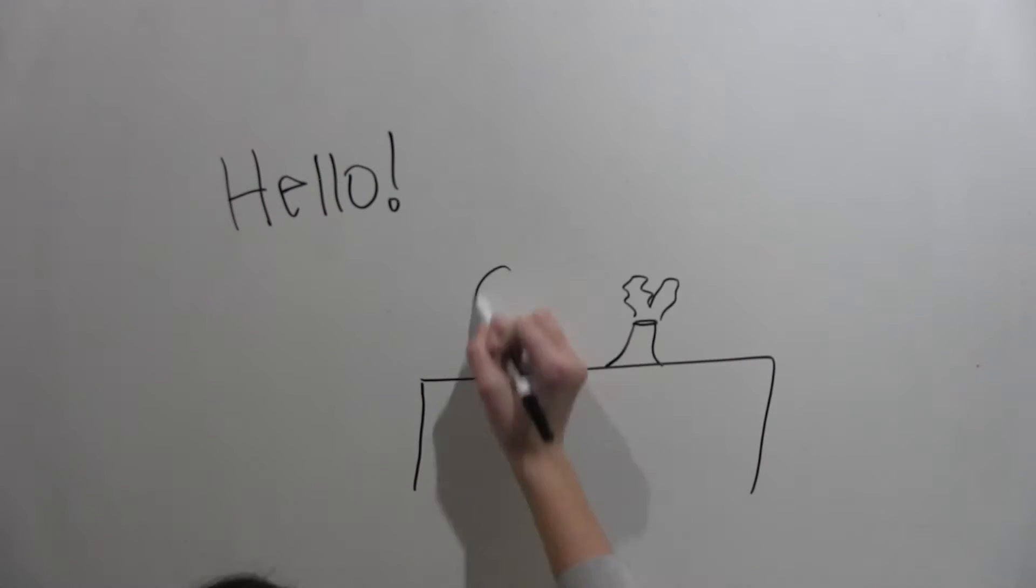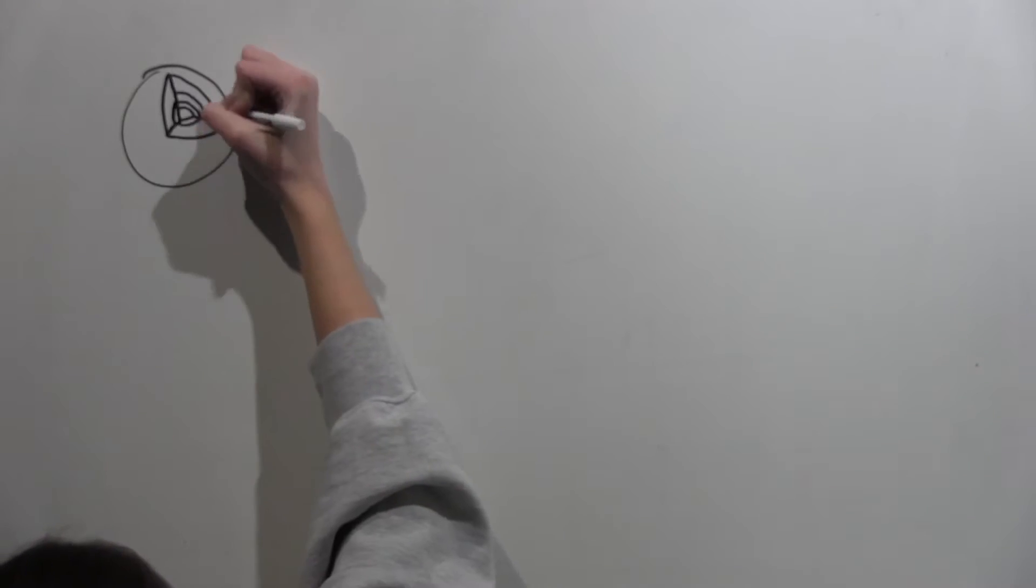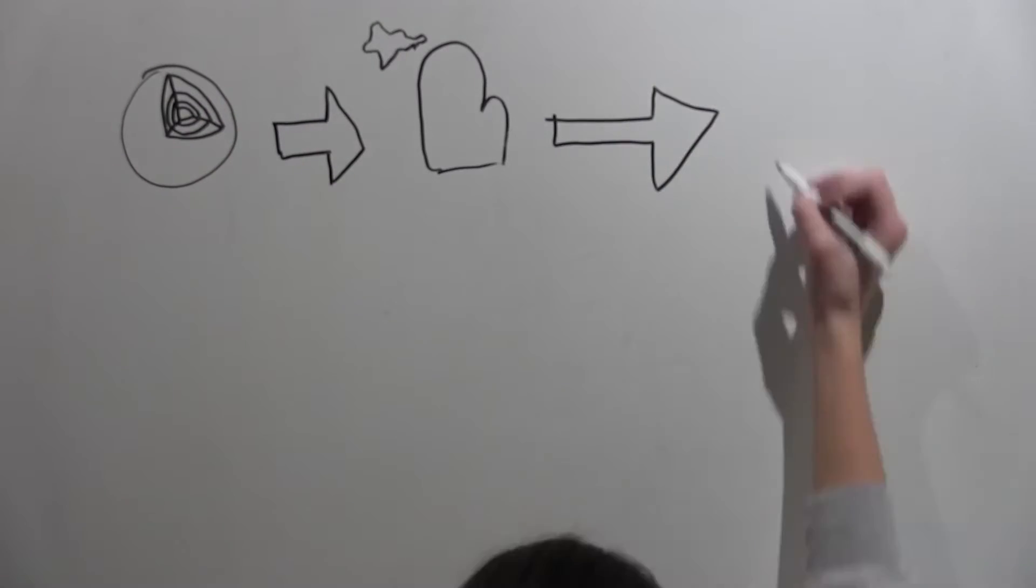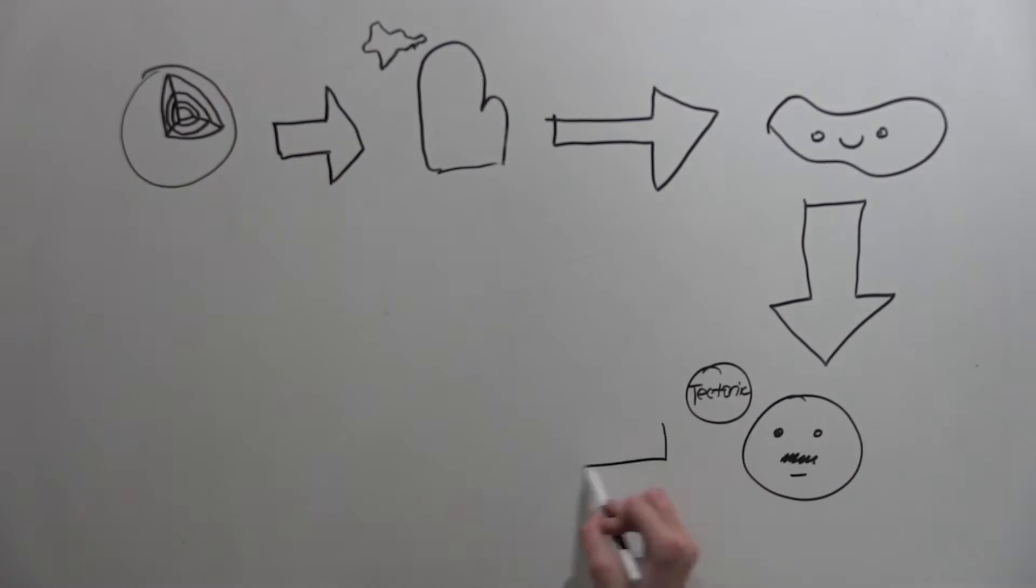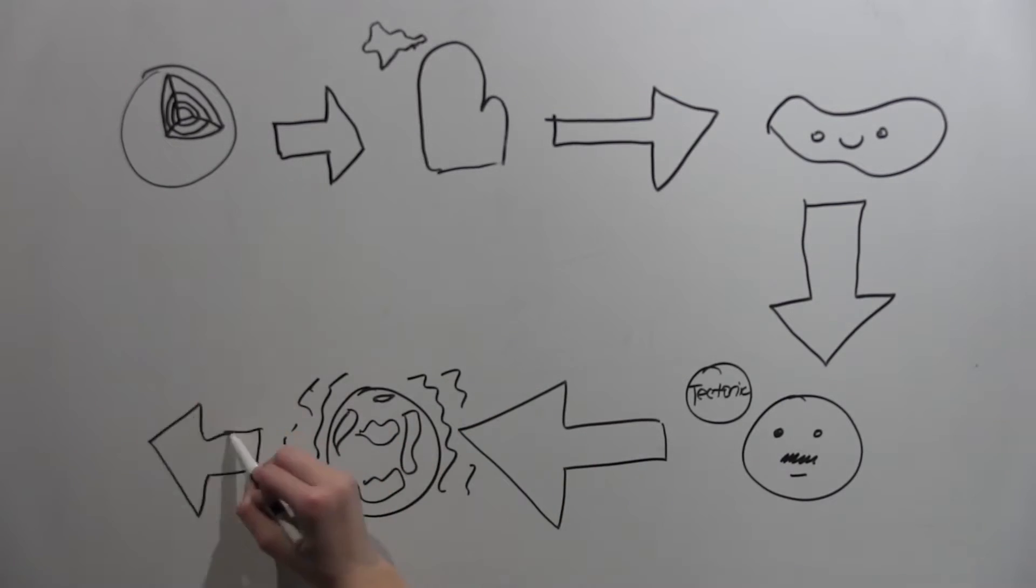Hello fellow scientists! So in today's crash course we'll be going over Earth's layers, how Michigan was formed, rock formation, plate tectonics and Alfred Wegener, earthquakes, and volcanoes.